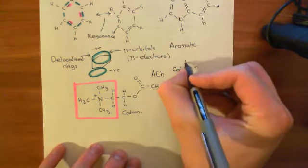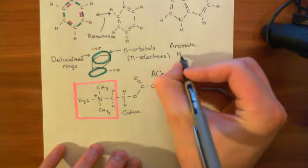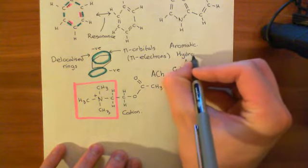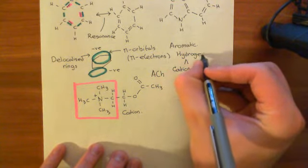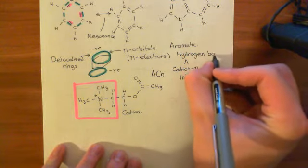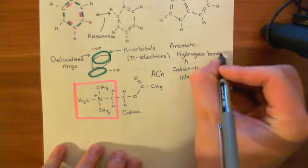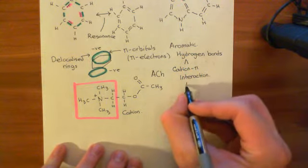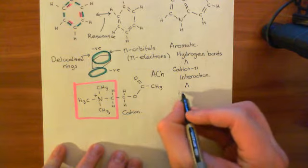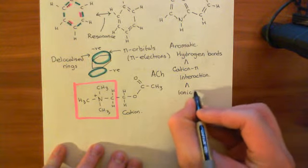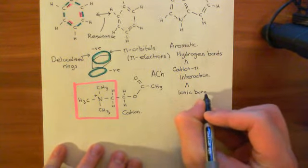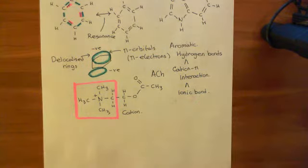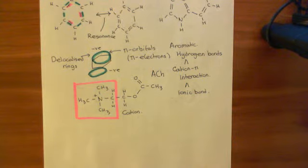These cation-pi interactions are actually quite strong — stronger than hydrogen bonds. And if you remember, hydrogen bonds hold together proteins and DNA, so they're not that weak. They are not quite as strong as ionic bonds, but they're somewhere in between the strength of a hydrogen bond and an ionic bond. So they are strong bonds — it's not a weak interaction.